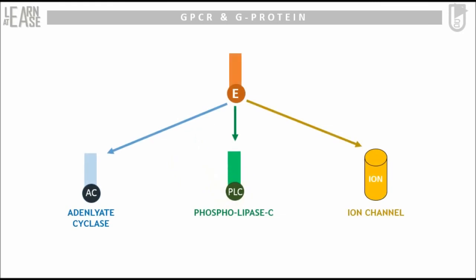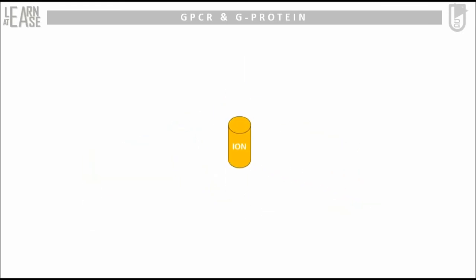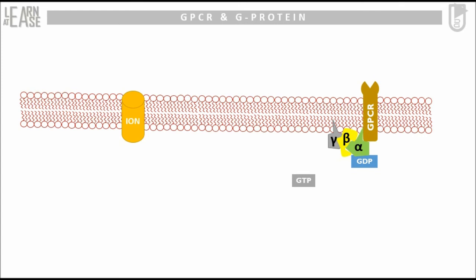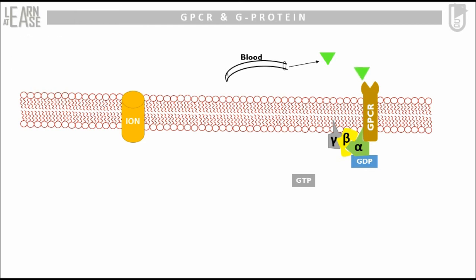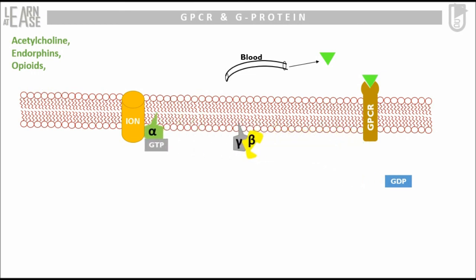Now let us see the functioning of ion channels as effectors. The assembly with an ion channel in its inactive form is shown. Hormones such as acetylcholine, endorphins, and opioids can activate the GPCR belonging to this assembly. When these specific ligands bind to GPCR, the conformational change allows the alpha subunit to replace GDP with GTP, activating the cycle and eventually activating the ion channel effector, causing the ion channel to open. Thus, ions from the extracellular environment can enter the cytoplasm and act as second messengers.